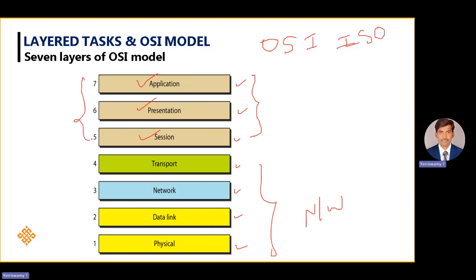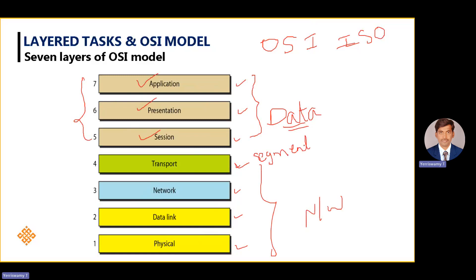Whatever data you have given in the application layer needs to be divided into fragments at the transport layer. Until the transport layer, the data is in its original form. When it comes to the transport layer, this data should be divided into smaller pieces, which we call fragments or segments. Each piece or fragment in the transport layer is called a segment. In the transport layer, the port number — or port address — is assigned to identify the respective protocol.